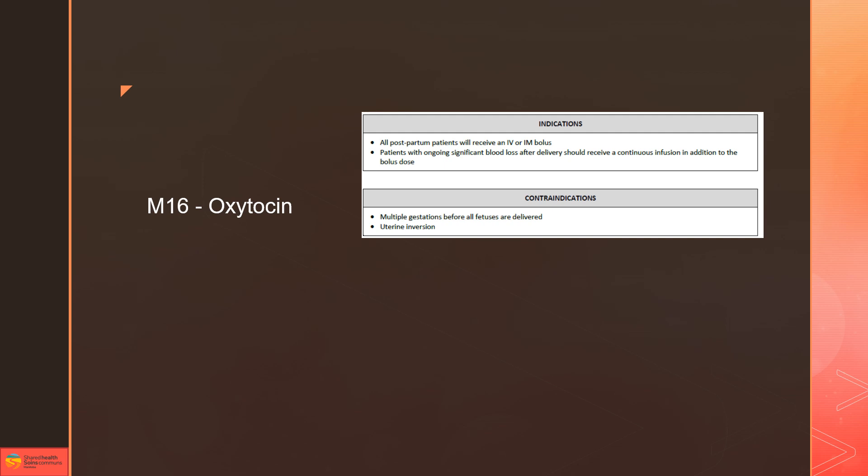Contraindications for using oxytocin are multiple gestations, because that can cause issues for the baby that's not been delivered yet, and uterine inversion, because oxytocin is going to cause a lot more pain and discomfort for mom and a bigger increase in bleeding.